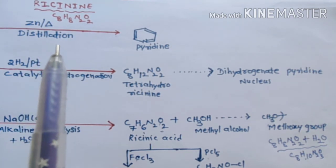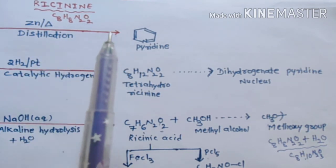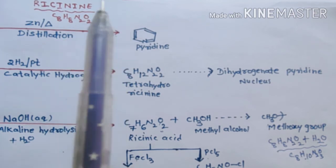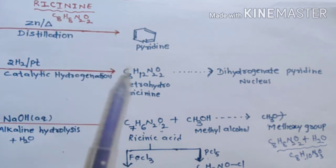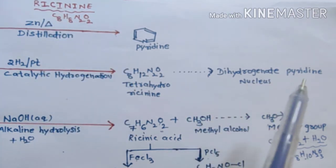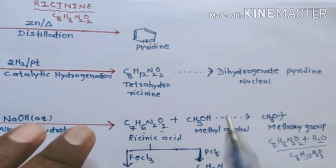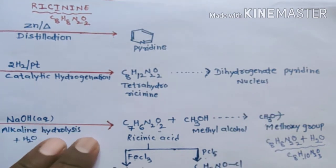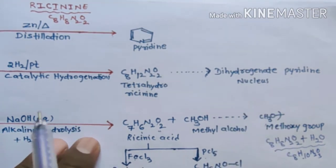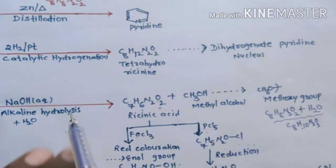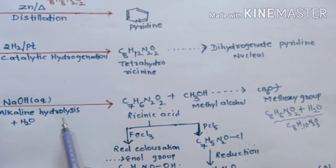That means instead of the pyridine ring, ricinine should contain a dihydrogenated pyridine nucleus in it. And when ricinine is subjected to hydrolysis in the presence of bases like NaOH,